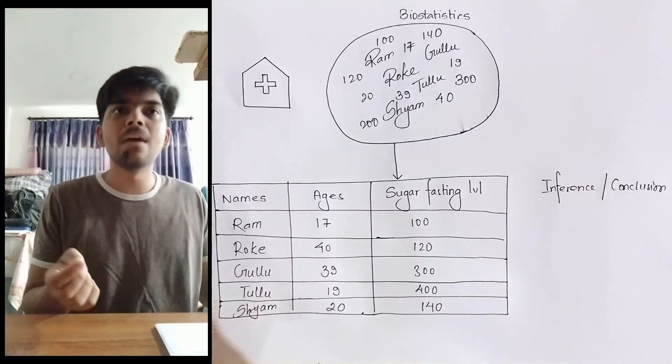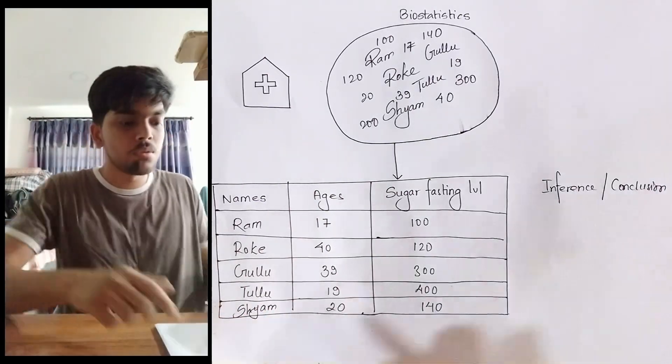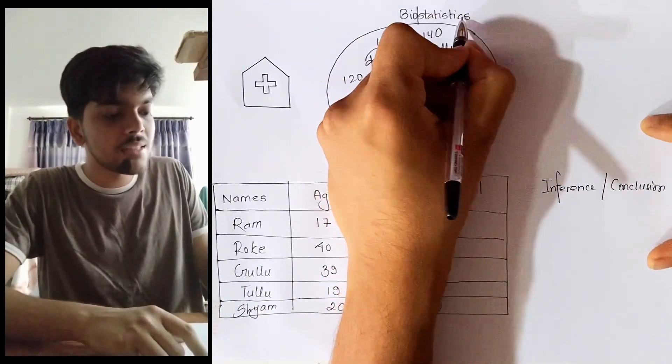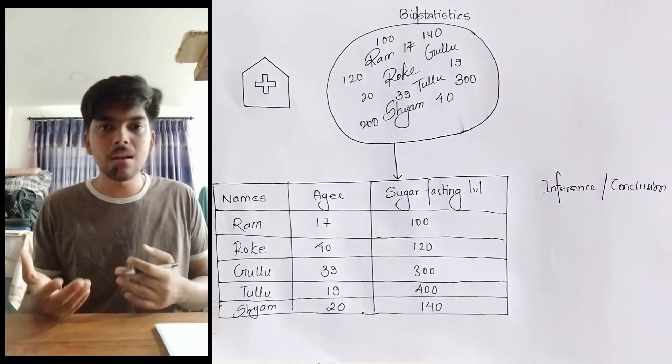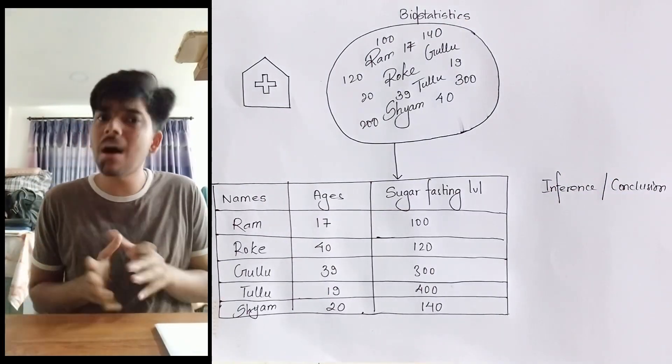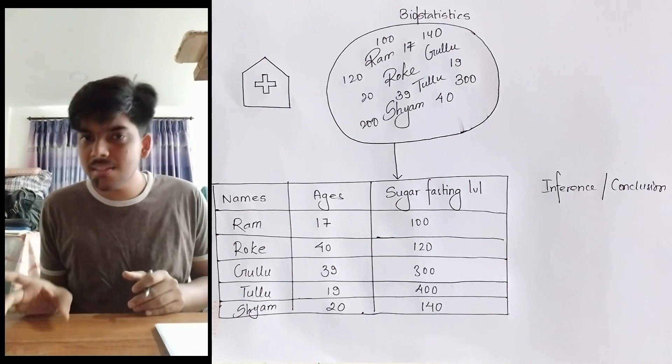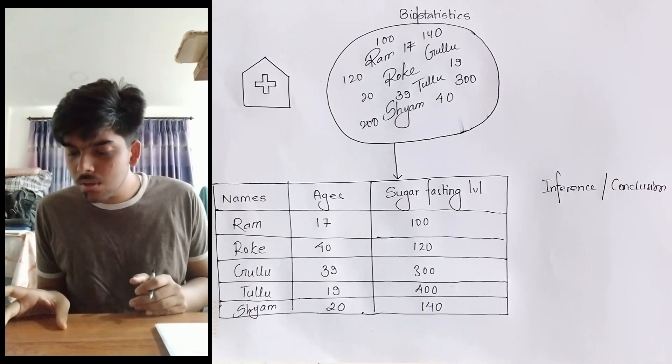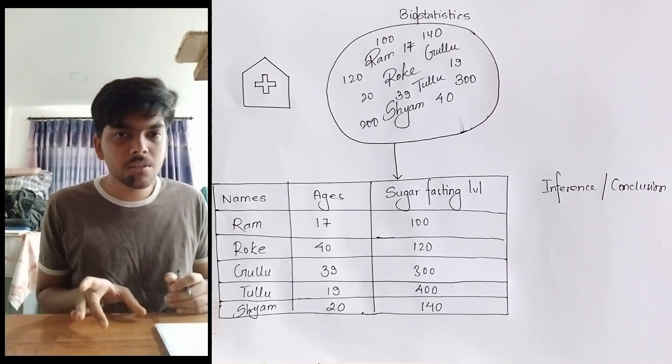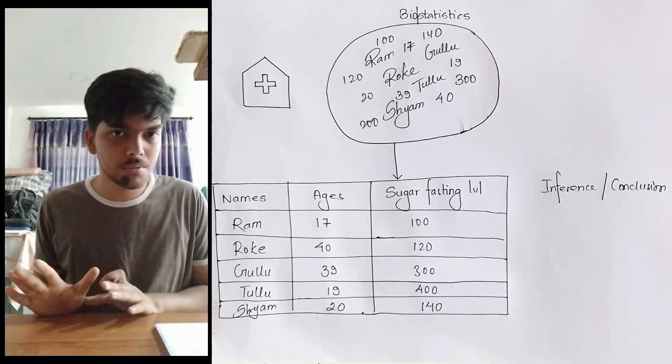What's bio? Bio means biology. So biostatistics - bio means biology and medical science is a part of biology. So the statistics which is used under the field of biology or medical science is biostatistics.